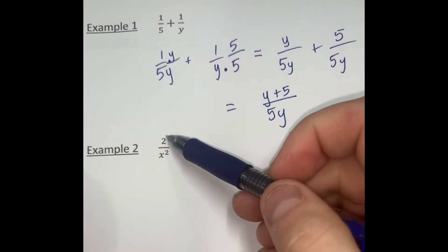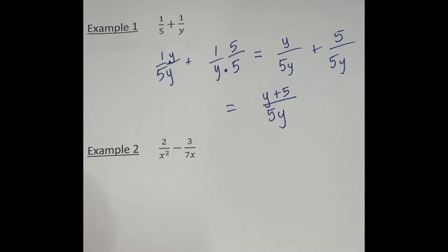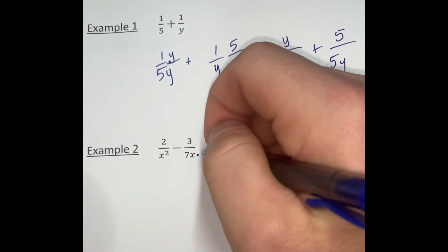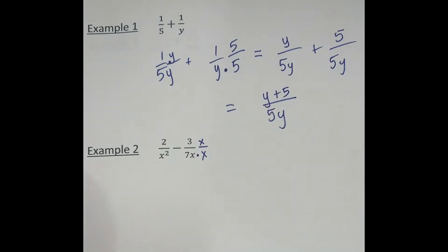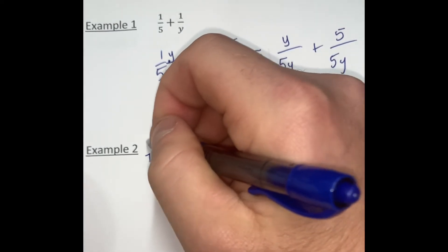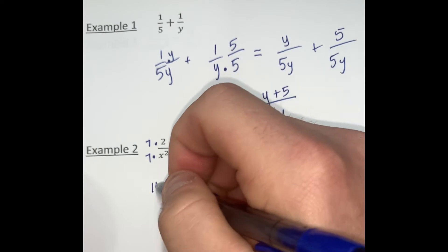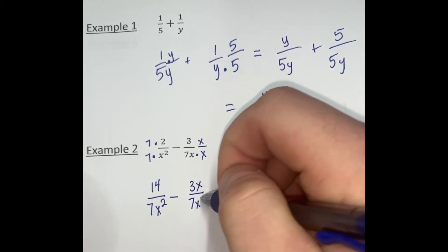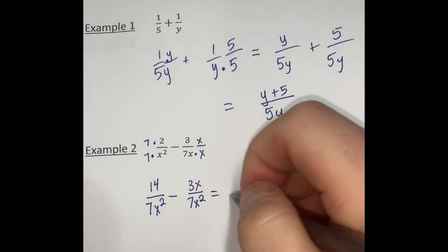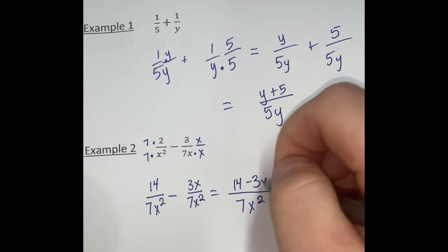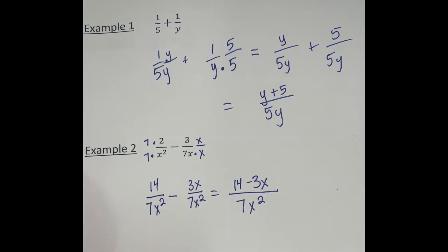In our second example, we have 2 over x squared and negative 3 over 7x. This expression has an x but needs an x squared — to make that happen, we multiply the top and bottom by x. So our least common denominator is 7x squared. The other expression has an x squared but needs a 7, so we multiply the top and bottom by 7. That gives us 14 over 7x squared minus 3x over 7x squared. Combining these gives us 14 minus 3x over 7x squared, and there are no like terms to combine.